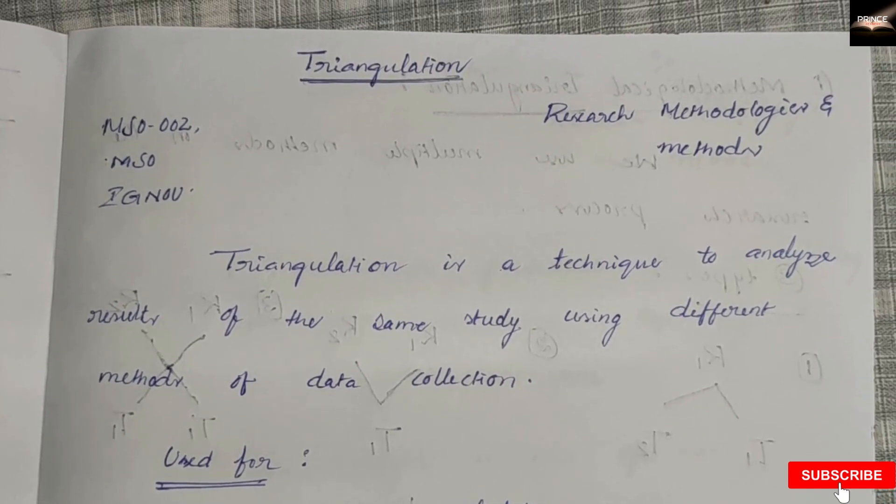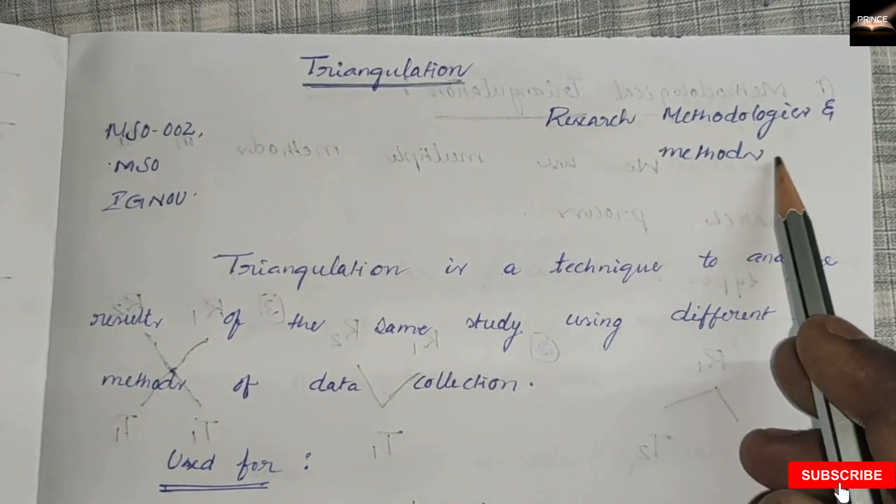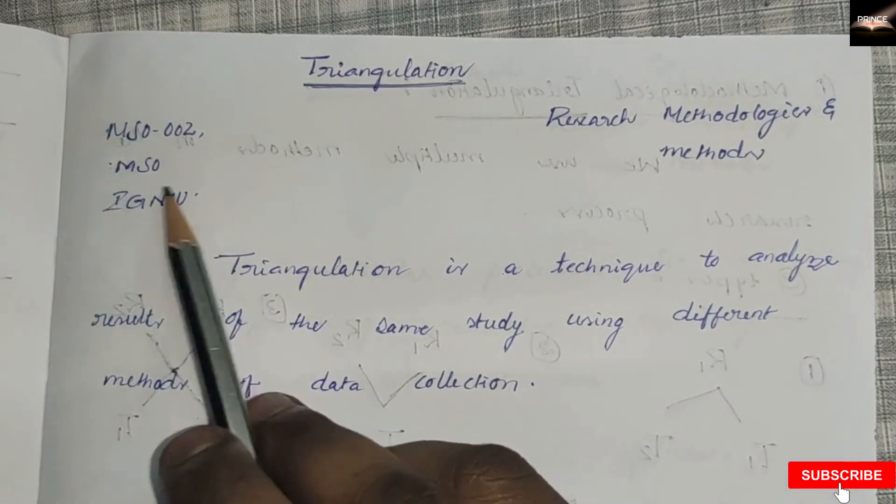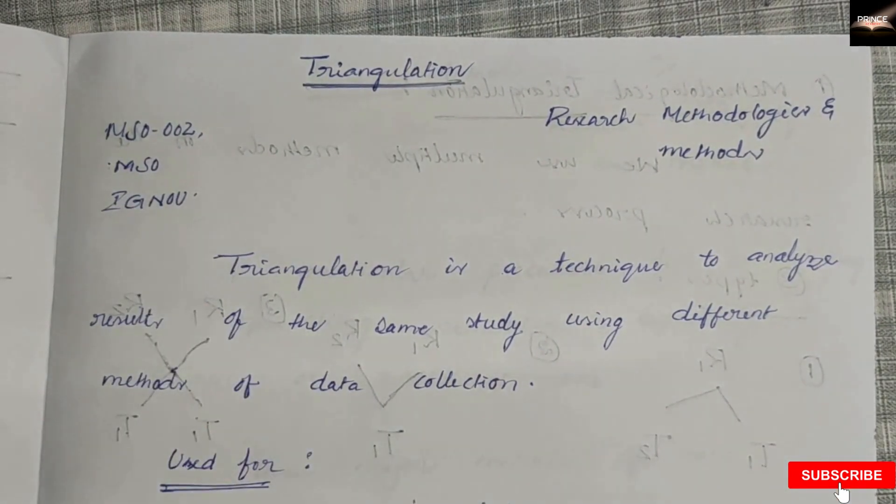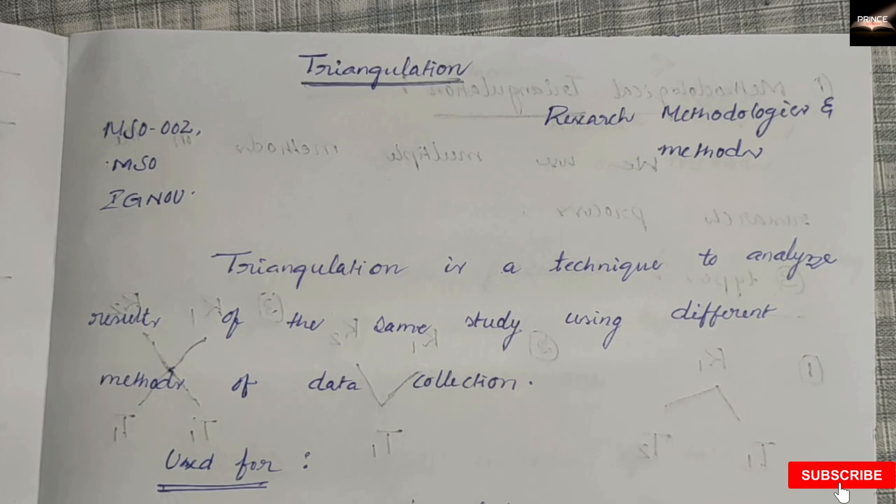This video is also for research interested students. We're going to deal with the concept of triangulation from the subject of research methodologies and methods, MS 4002, MSO program, IGNOU. We'll start with the definition of triangulation, its uses, and finally conclude with the types of triangulation.